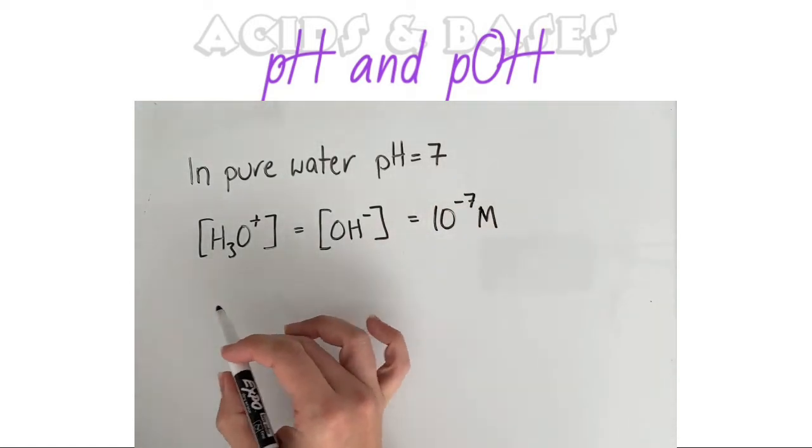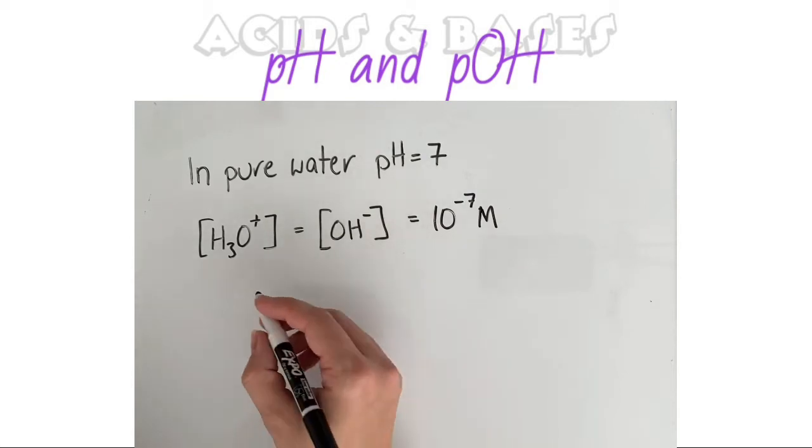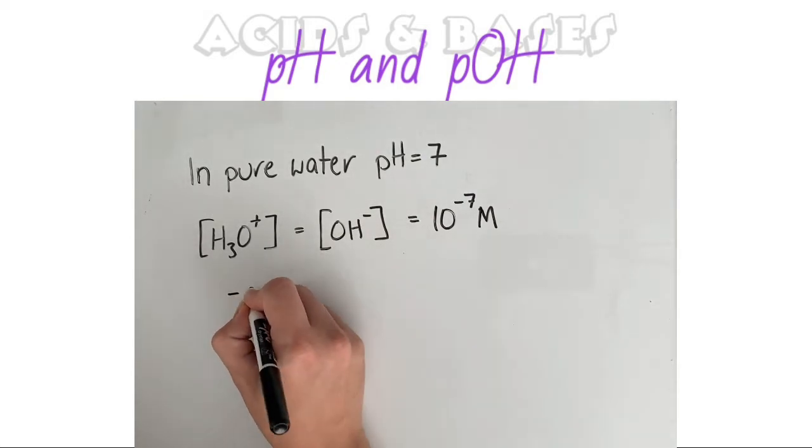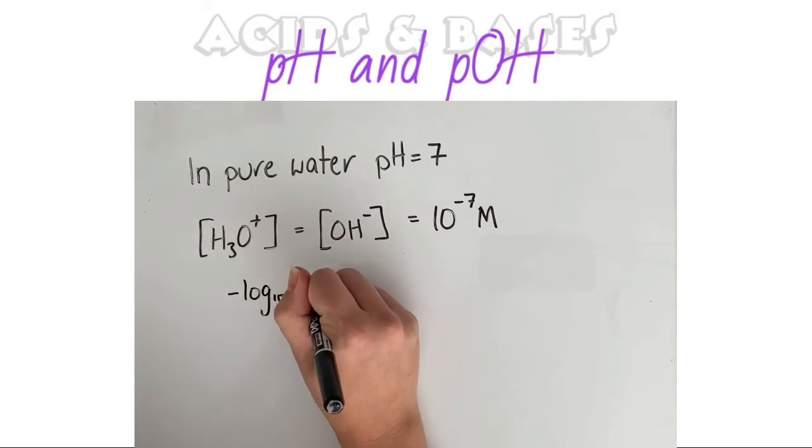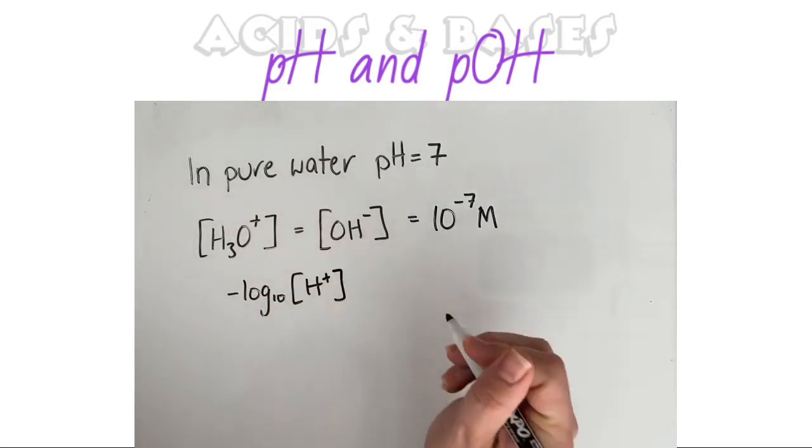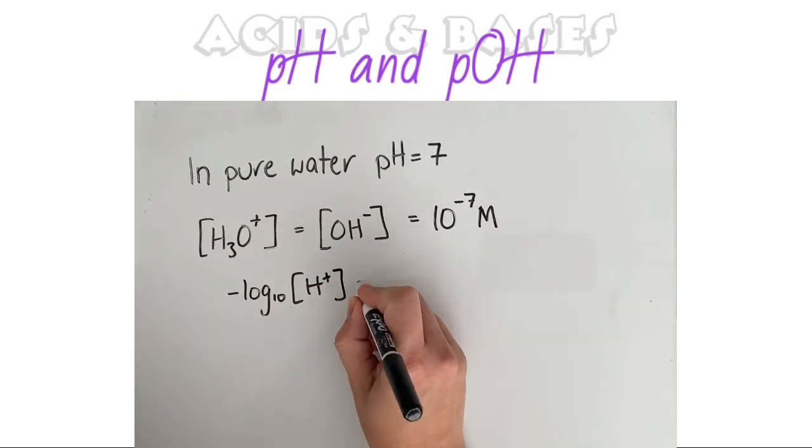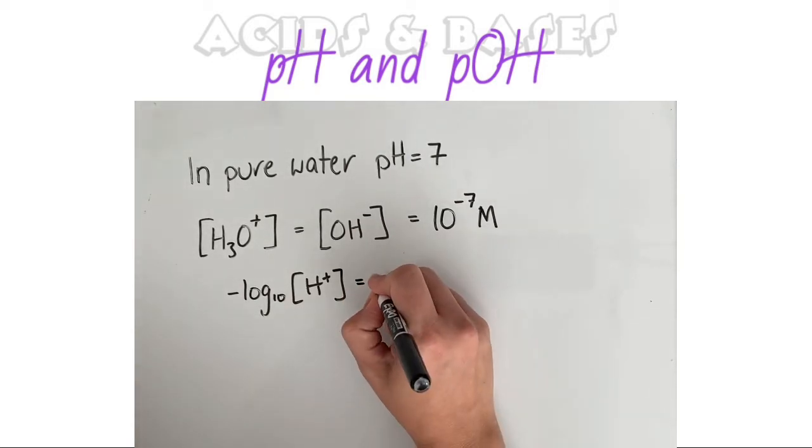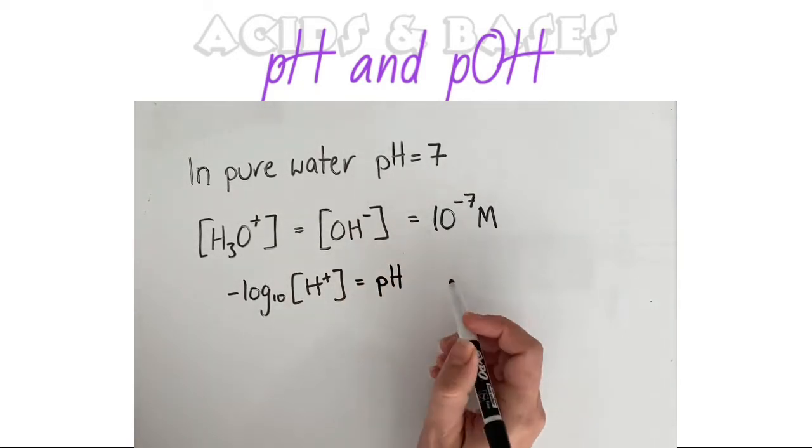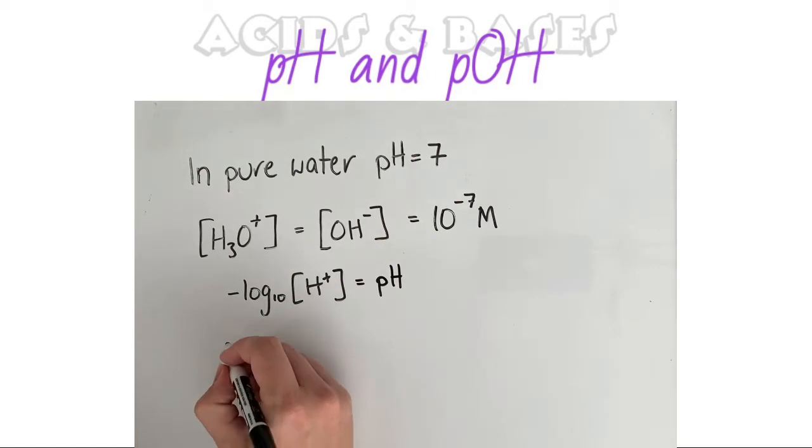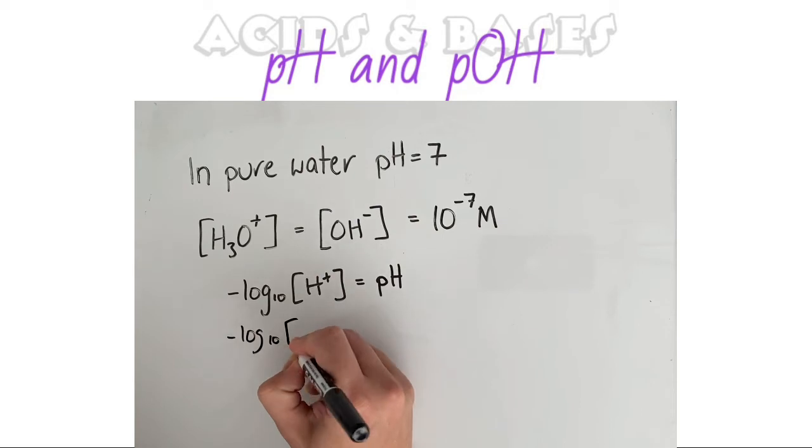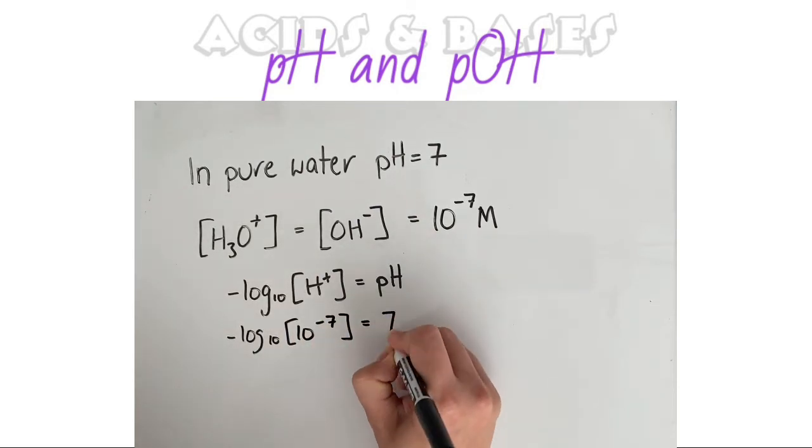Now if we substitute that into our logarithmic equation, so the minus log to the base 10 of whatever the hydrogen ion concentration is, is going to give us the pH. So if we sub this value in, then we get that the minus log equals 7.